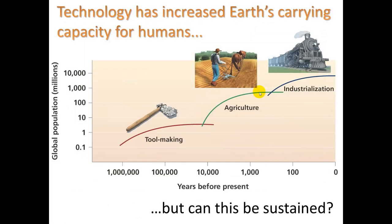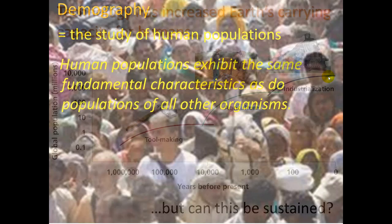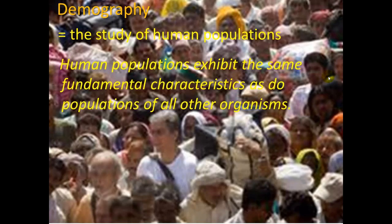Technology has increased Earth's carrying capacity for humans, but can this be sustained? Through tool making, through agriculture as a form of technology, through industrialization, we have continually been able to provide for more and more humans on this planet. Can we keep it up? Part of the answers to that question lie in demography — the study of human populations. Human populations exhibit the same fundamental characteristics as do populations of all other organisms.